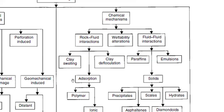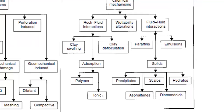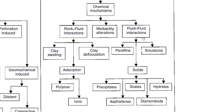Deflocculation can occur along with adsorption, where injected fluid adsorbs onto the surface of the rock pores, restricting flow and reducing permeability. Adsorption can occur due to polymer adsorption or ionic adsorption. In fluid-fluid interactions we can also have paraffins, emulsions, and solids. Solids can occur in the form of precipitates — reactions cause precipitation which reduces productivity, similar to scale, hydrates, asphaltenes, and diamondoids reducing permeability.